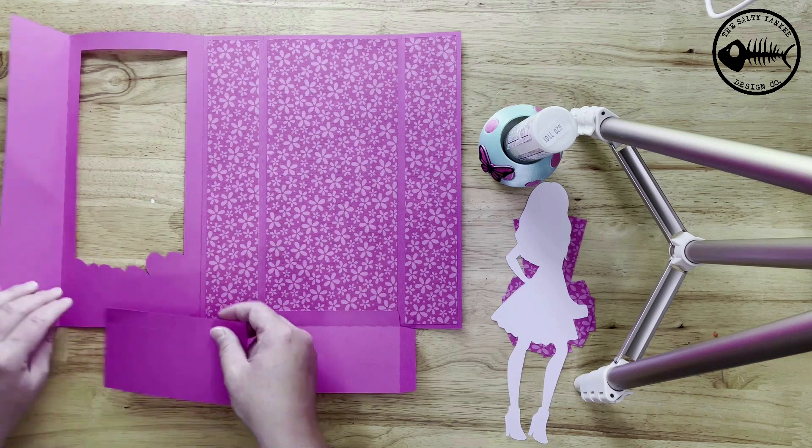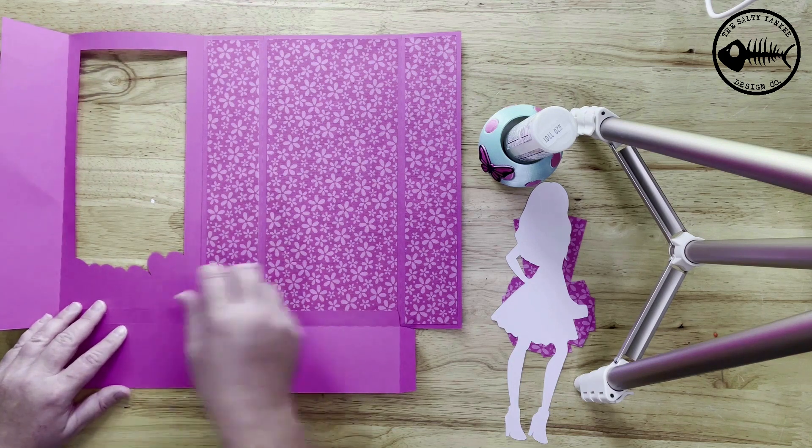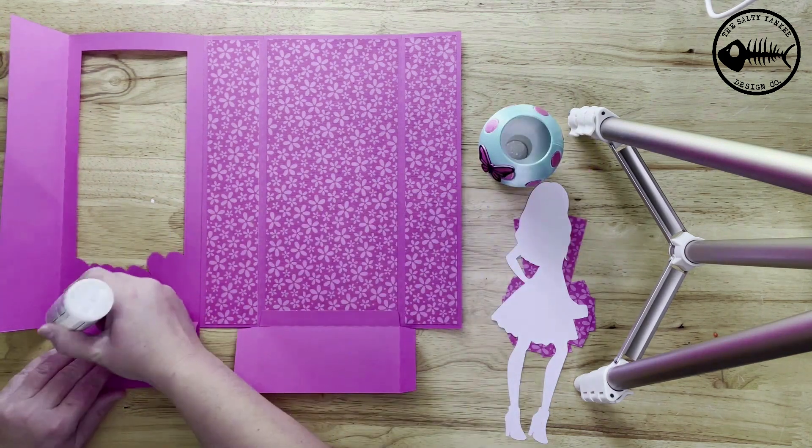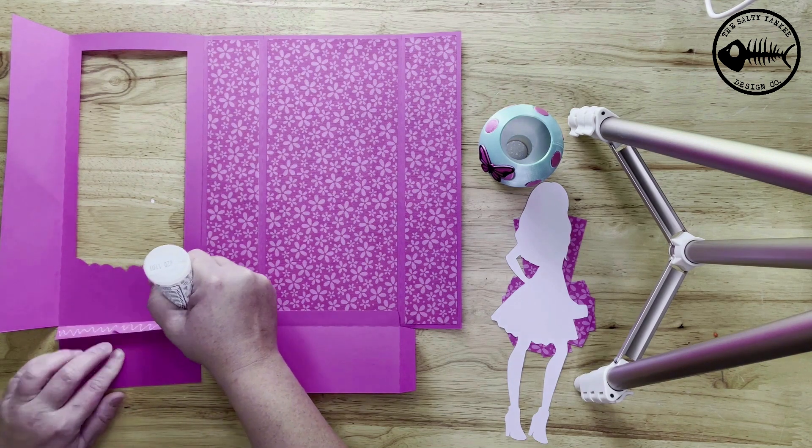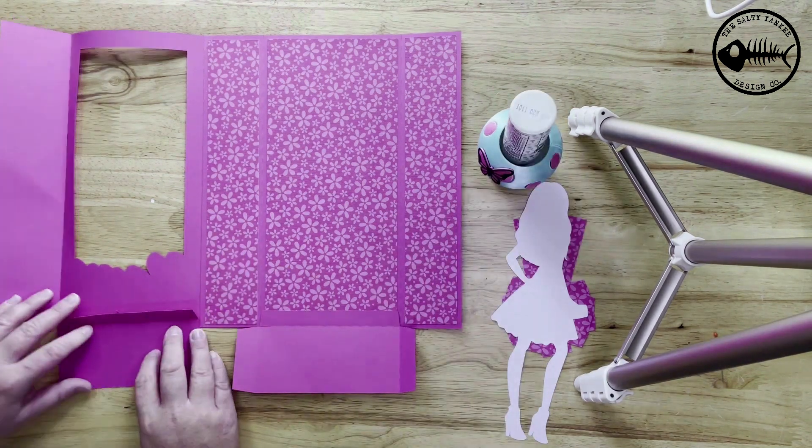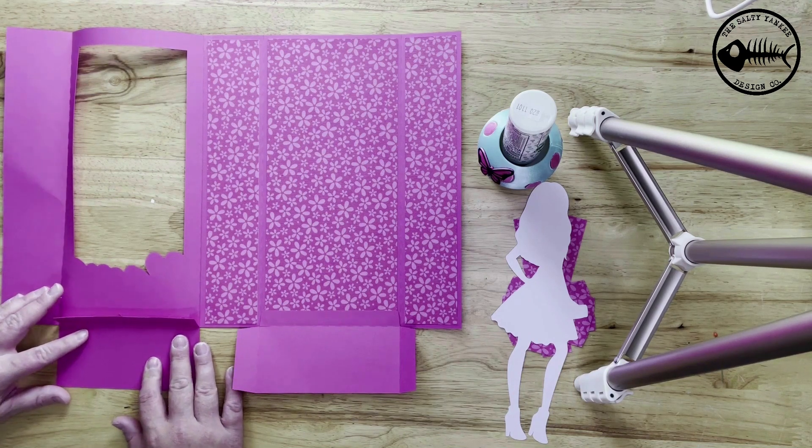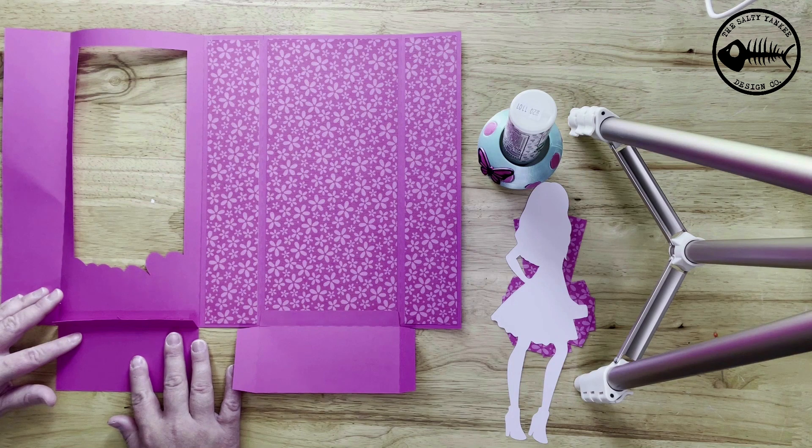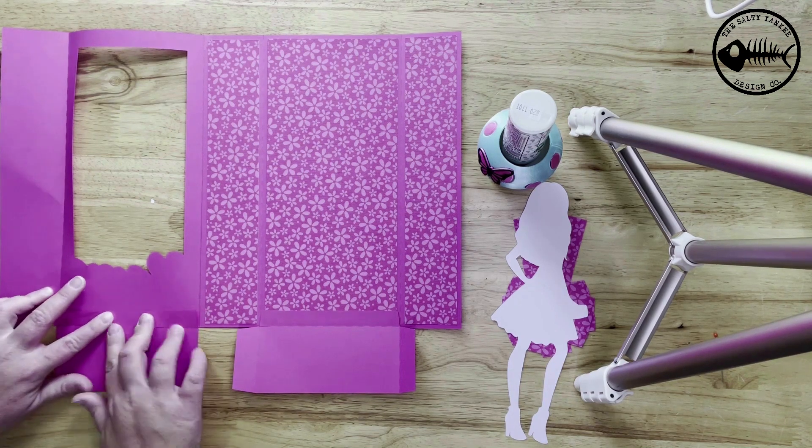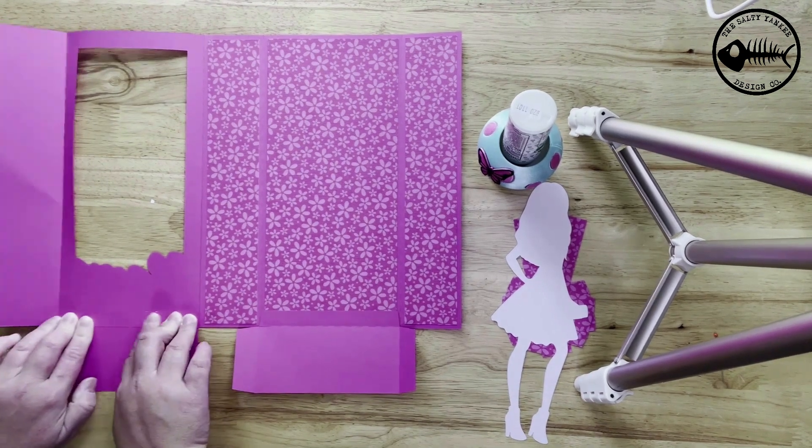Now I'm going to glue on the bottom that's attached to the front. It's going to be the same thing. I'm going to line it up with the bottom of the front, add glue to that tab, and then press it down to the inside of the front.